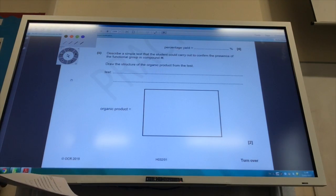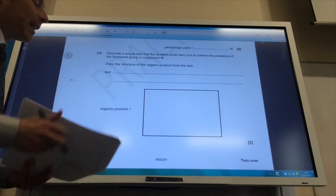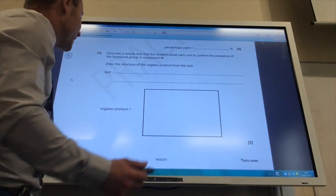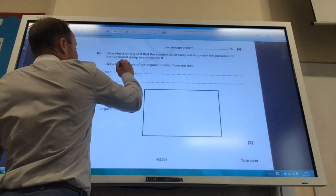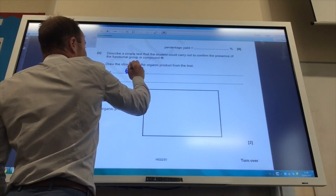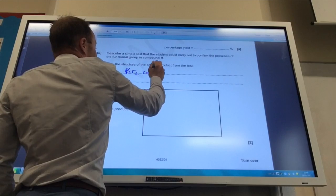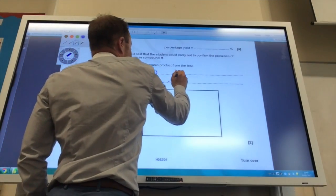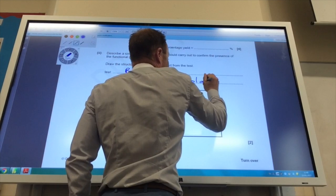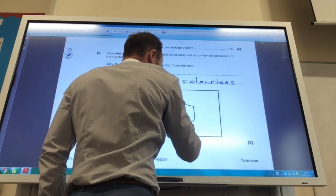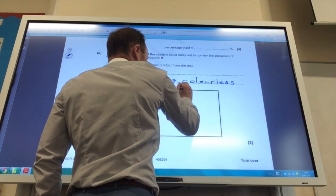Describe the simple test that a student could carry out to determine the functional group in H. H has, of course, got a carbon-carbon double bond. So it's our old favourite. We would add bromine water. It would be, we would add Br2 aqueous, and it would go from orange to colourless. And the bromine, we know, adds across the double bond.